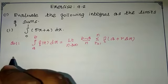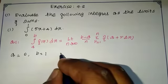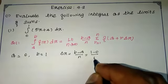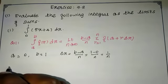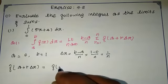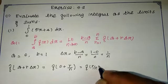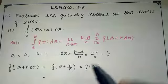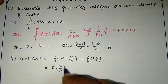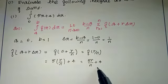Here delta x equals (b minus a) by n, which is (1 minus 0) by n, equal to 1 by n. Then f(a + r·delta x) equals f(0 + r·(1/n)) equals f(r/n). Since f(x) equals 5x plus 4, substituting x equal to r by n gives us 5r/n plus 4.